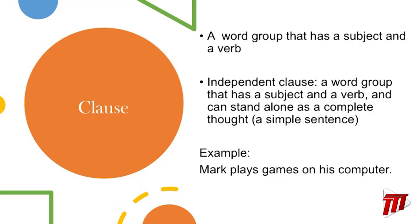Now let's talk about clauses. A clause is a group of words that has a subject and a verb. And what is an independent clause? Well, an independent clause is one that stands on its own. It doesn't need any help from anything else in the sentence — it stands on its own so much that an independent clause can also be called a simple sentence.